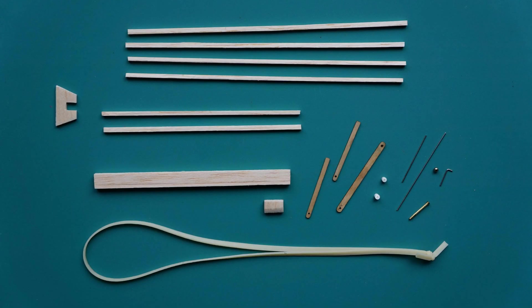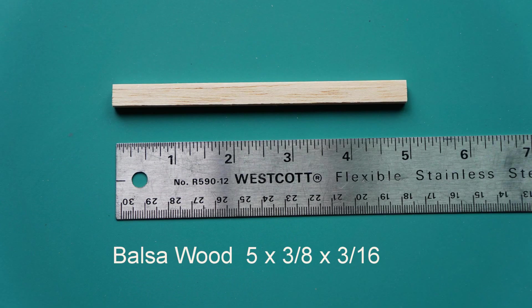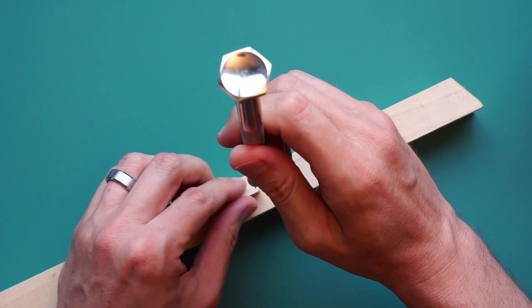These are the materials for the Flex Ornithopter. You can find these at a hobby shop or online. We use balsa wood because it's light and that makes it fly better. This part forms the body of the Ornithopter. We're going to drill a hole in it first before we get the other parts together.